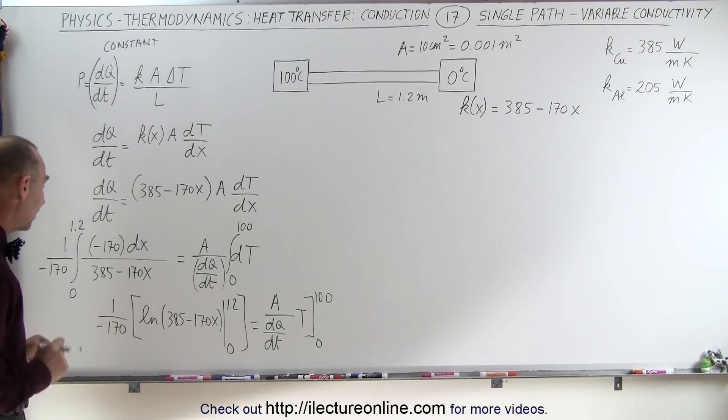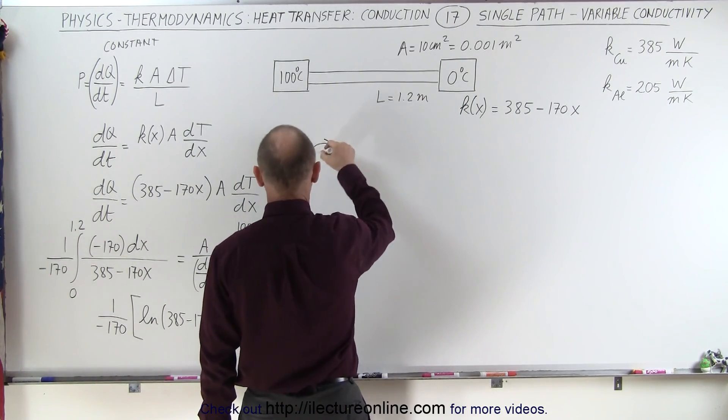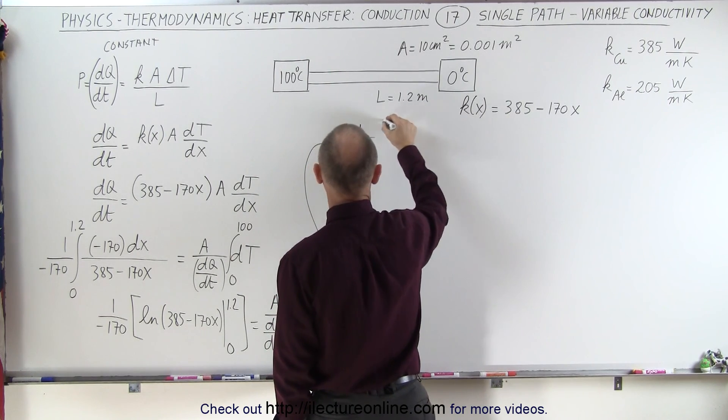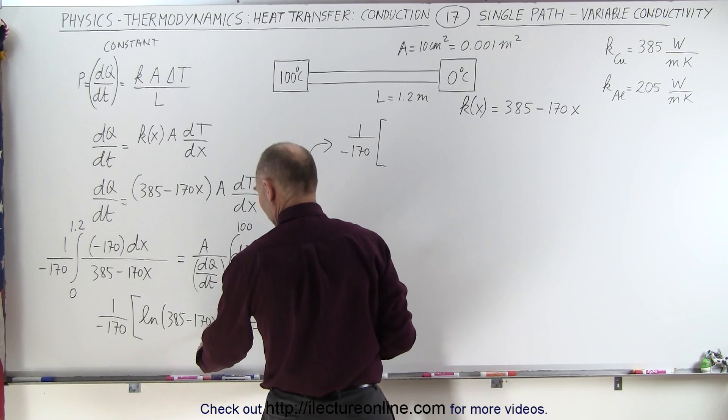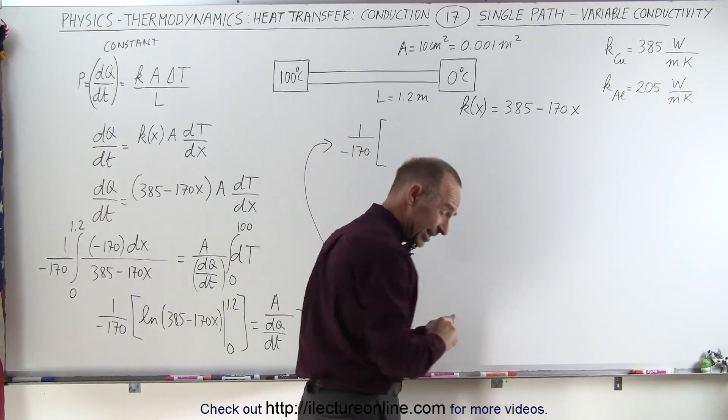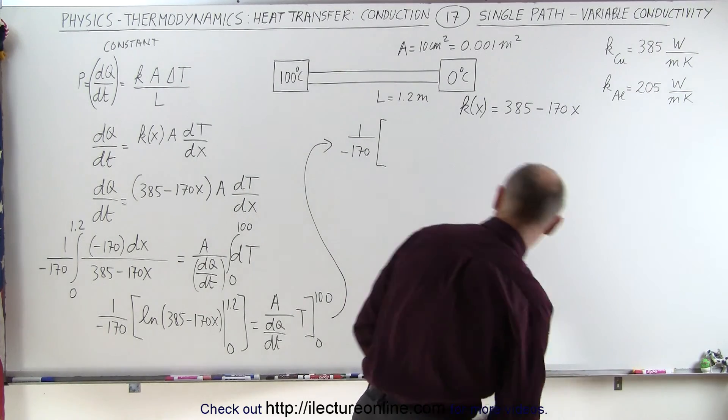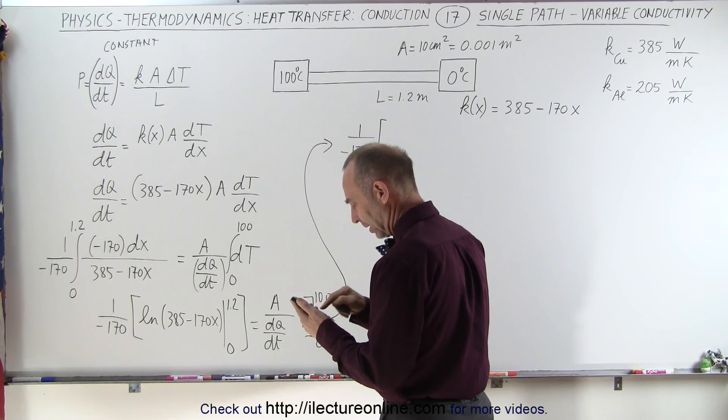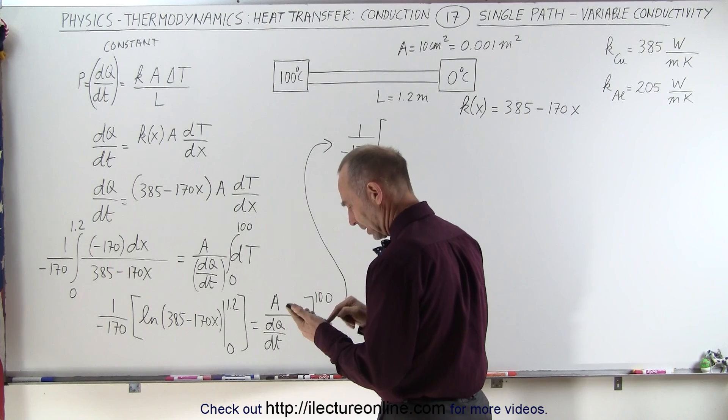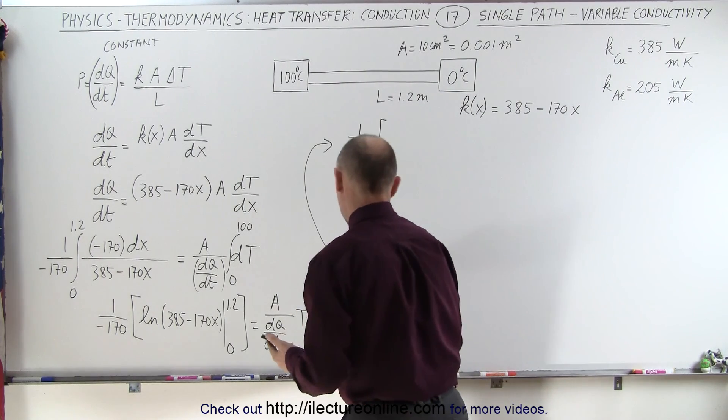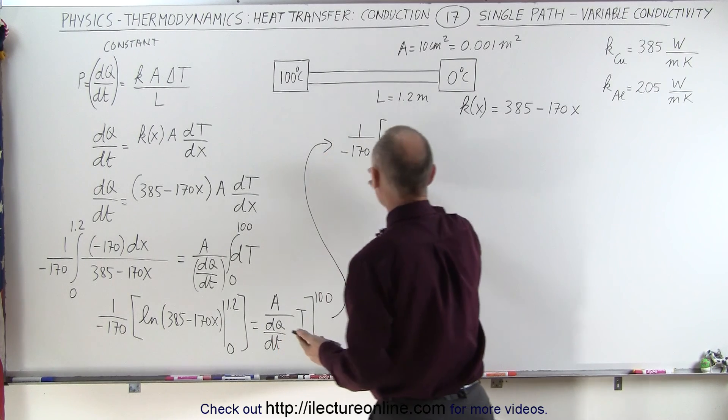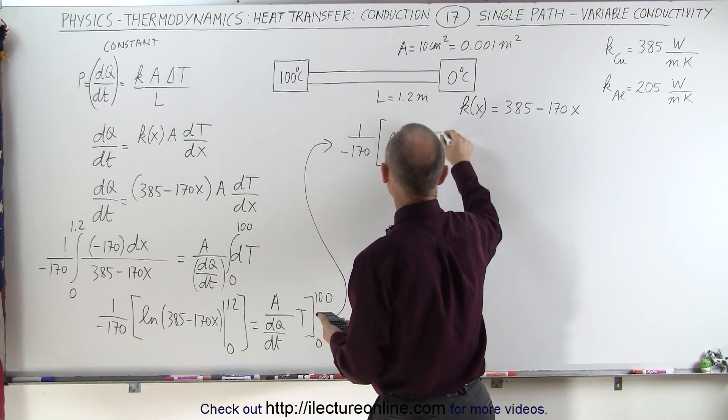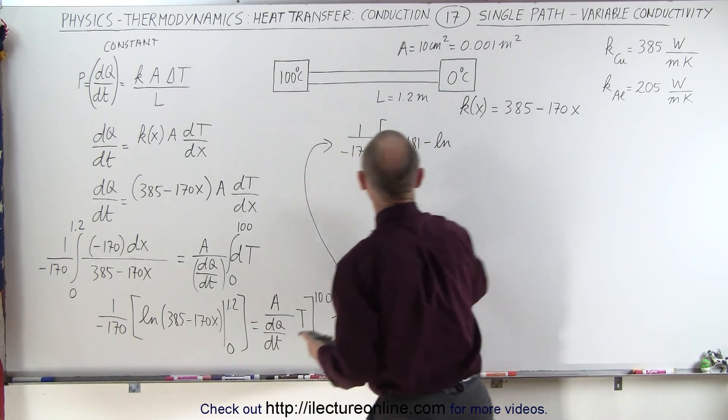All right, now we're ready to evaluate this integral. So let's go over here, we need some more room. On the left side, we have 1 over minus 170 times. When we plug in the upper limit, we get 170 times 1.2 subtracted from 385. I think I'll grab my calculator. Okay, so 170 times 1.2 subtracted from 385. We get 181. So that means we get 1 over minus 170 times the natural log of 181 minus the natural log of, when we plug in the 0, we get the natural log of 385.